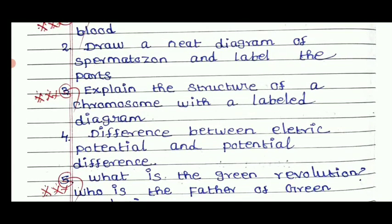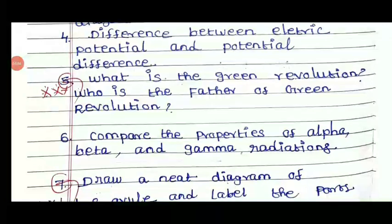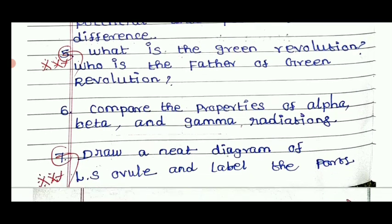Let's look at the difference between electric potential and potential difference. What is the green revolution? Who is the father of the green revolution? M.S. Swaminathan. Compare the properties of alpha, beta, and gamma radiation — this is also important.